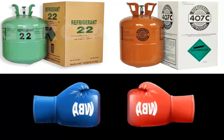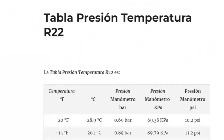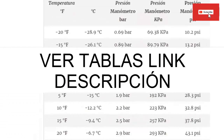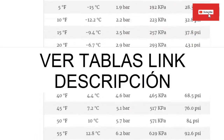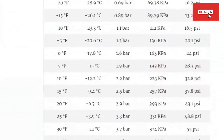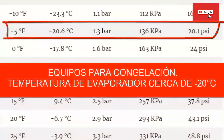The pressures of R-22 and R-407C are very similar. We can say that R-22 is a refrigerant that handles medium pressures. For a low temperature system, freezing to minus 20.5 degrees Celsius (approximately minus 5 degrees Fahrenheit), we need a pressure on the low manometer of approximately 20.1 psi, equivalent to 1.3 bars.